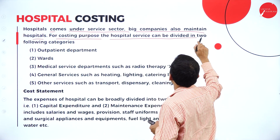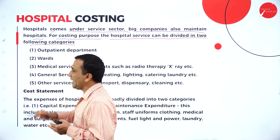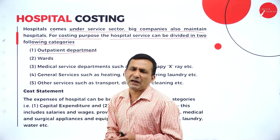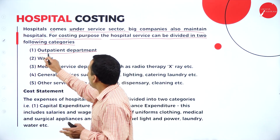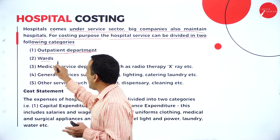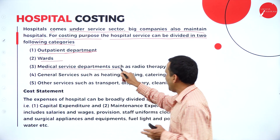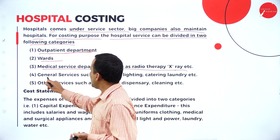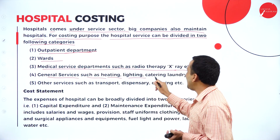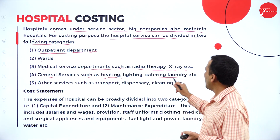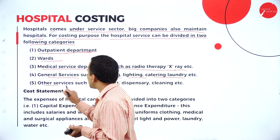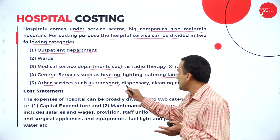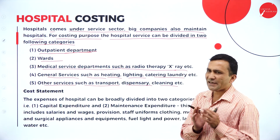Hospital comes under the service sector; big companies also maintain hospitals. For costing purposes, hospital services can be divided into the following categories: outpatient department, ward, medical service departments such as radiotherapy, X-ray, and scanning, general services such as heating, lighting, catering, and laundry, and other services such as transportation (ambulance), dispensary, and cleaning.